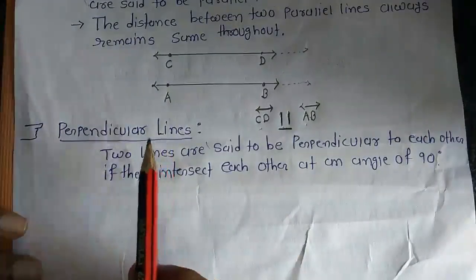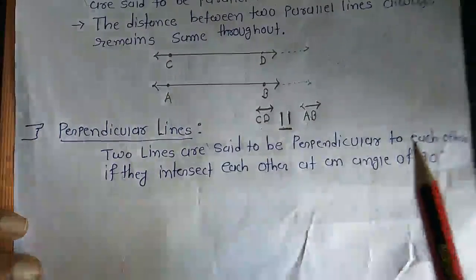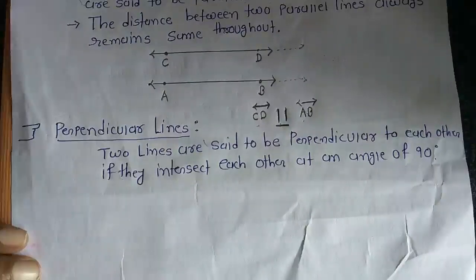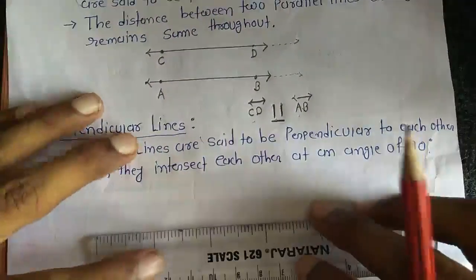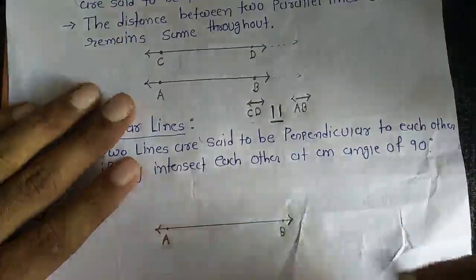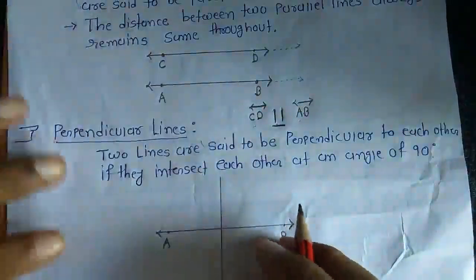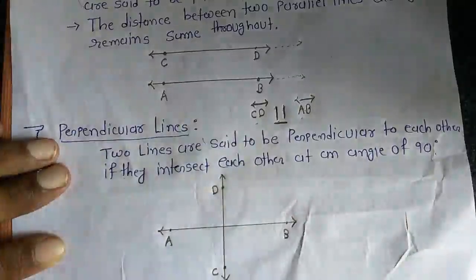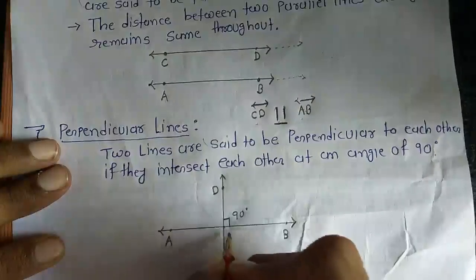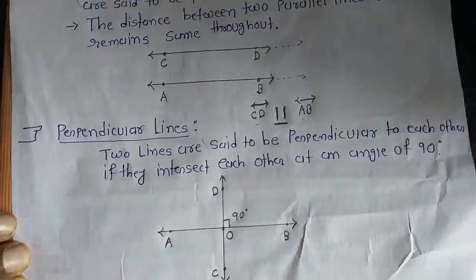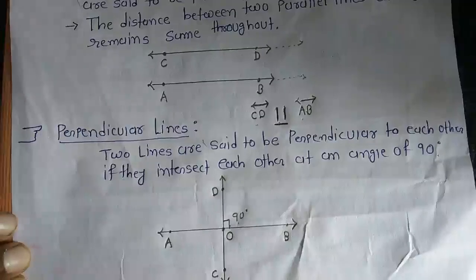Next: Perpendicular lines. Two lines are said to be perpendicular to each other if they intersect each other at an angle of 90 degrees. Perpendicular line kisko bolenge? Do lines jo 90 degree pe intersect ho rahi hain. Line AB aur line CD — point O pe 90 degree pe intersect ho rahi hain. Isko bol sakta hai perpendicular lines.